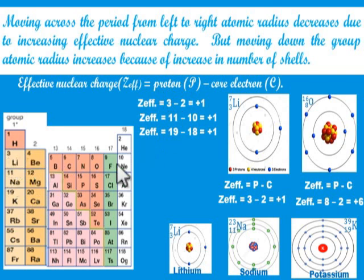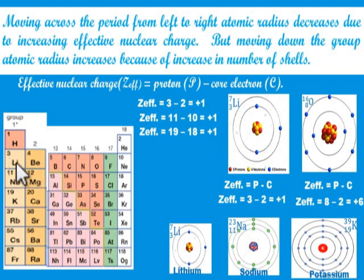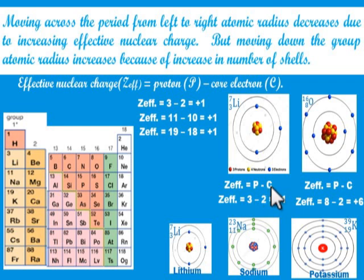As you move from left to right across the period, the atomic radius decreases while the effective nuclear charge increases. Let's calculate the effective nuclear charge of lithium. Lithium has an atomic number of 3, so it has 3 protons. In the atomic structure of lithium, the first shell has a maximum of 2 electrons, and the last shell has the remaining 1 electron. Effective nuclear charge of lithium equals number of protons minus core electrons: 3 minus 2 equals 1. So the effective nuclear charge of lithium is 1.